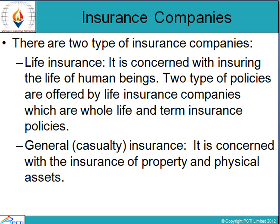When we talk about insurance companies, there are basically two types. First, life insurance companies are concerned with insuring the life of an individual. There are two types of policies offered by life insurance companies — whole life and term insurance policies. With whole life insurance, the person pays a premium for a certain period, is insured for their whole life, and the maturity value of the policy is only payable at the death of the insured person to their inheritors or beneficiaries.